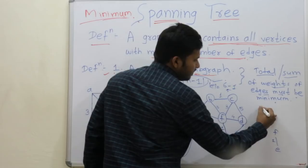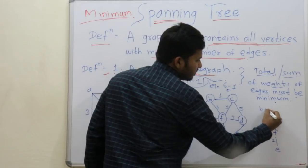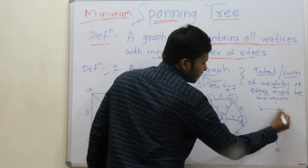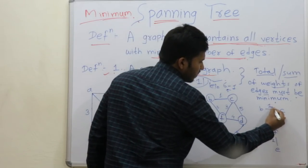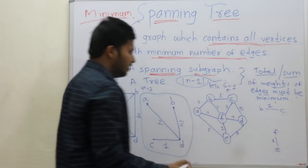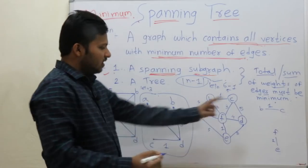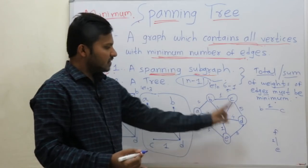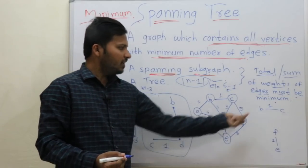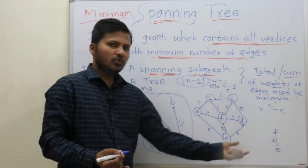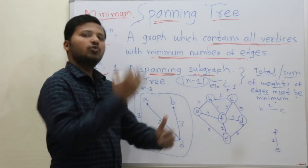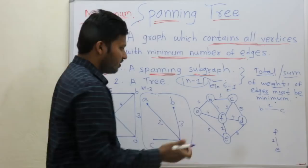So take edge B, C. Now, any other edge with minimum weight remaining? No — so let us go to upper values.